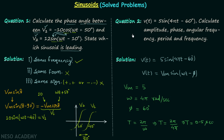We have now calculated the amplitude, phase, angular frequency, and period. The only remaining quantity is frequency. Frequency is equal to 1 over the time period, so frequency = 1 / 0.5 = 2 Hz.